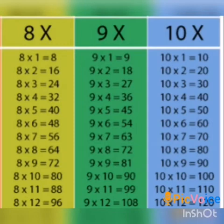Table of 10: 10 ones are 10, 10 twos are 20, 10 threes are 30, 10 fours are 40, 10 fives are 50, 10 sixes are 60, 10 sevens are 70, 10 eights are 80, 10 nines are 90, 10 tens are 100, 10 elevens are 110, 10 twelves are 120.